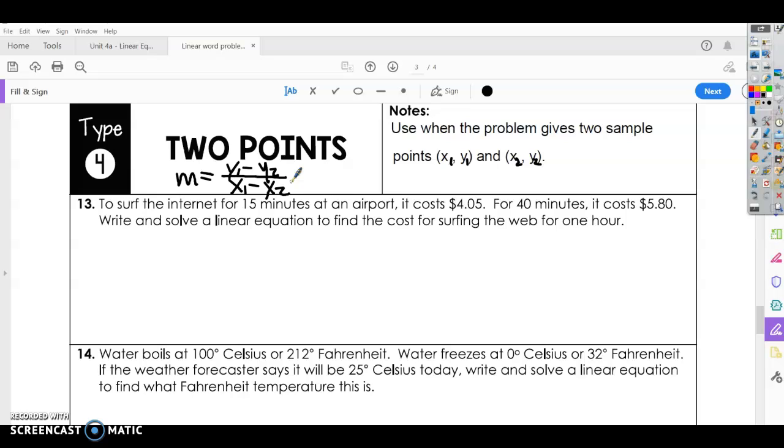Alright, let's get started. To surf the internet for 15 minutes at an airport, it cost $4.05. So that's our first point. For 40 minutes, it cost $5.80. That's our second point. Write and solve a linear equation to find the cost of surfing the web for one hour. Alright, so the first thing we want to do is find the slope.